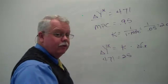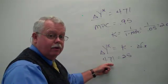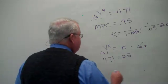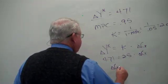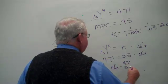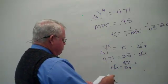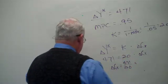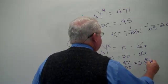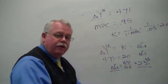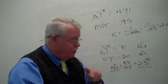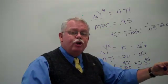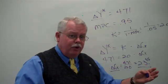So delta G, 471 over 20. This comes up $23.55. That's the change in government spending that if multiplied through the economy, theoretically, would boost total spending by $471, would increase enough spending to create enough jobs to move us to full employment. You tracking with me okay on that?